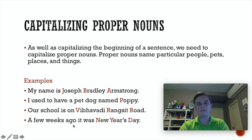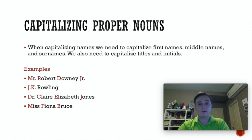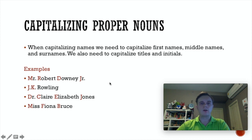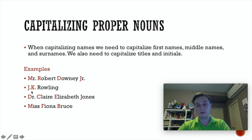Our school is on Vipavadi-Rangsit Road — capital V, capital R, capital R. And a few weeks ago it was New Year's Day, so you capitalise the name of the holiday. When you're capitalising names, you need to make sure that you capitalise the first name, the middle name, the surname, and any titles like Mr., Dr., Miss, or Junior, or if you're using initials. Initials are a shorter way of saying a name — so J.K. Rowling is an author who uses the initials J and K to take the place of her first name and middle name.